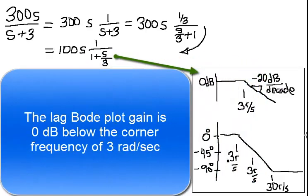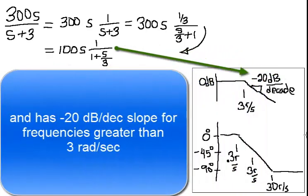The lag Bode plot gain is 0 dB below the corner frequency of 3 radians per second, and has negative 20 dB per decade slope for frequencies greater than 3 radians per second.